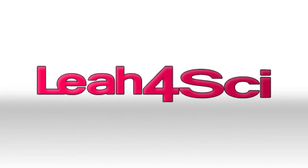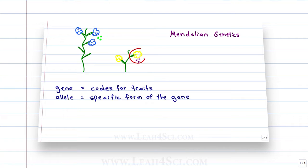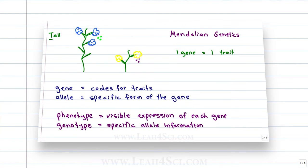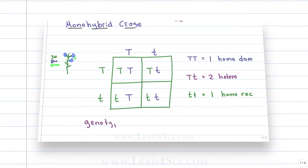Lea here from lea4sci.com and in this MCAT video we're going to look at a dihybrid cross and how to draw it and how to calculate the Punnett square shortcuts without having to draw it. In the last video we introduced the Punnett square and the basics of Mendelian genetics including how to draw and calculate a monohybrid cross when we're crossing one trait. In this video, we're going to look at a more advanced Punnett square for a dihybrid cross and how to calculate if you want to do something like a trihybrid or even a tetrahybrid cross.